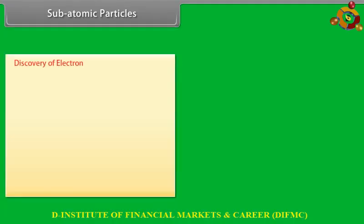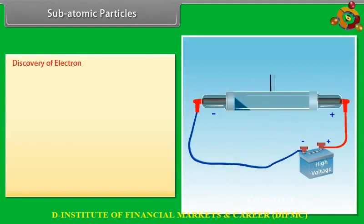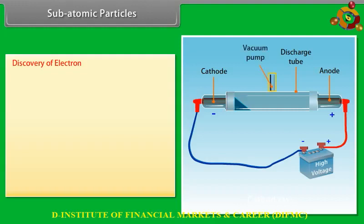Discovery of electron. A discharge tube is a long glass tube fitted with metal electrodes on either end, across which high voltage can be applied. The tube is also connected to a vacuum pump for controlling the pressure of gas inside the discharge tube. There is a coating of phosphorescent material behind the anode.